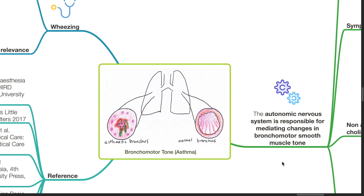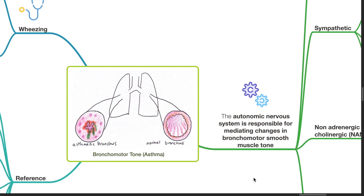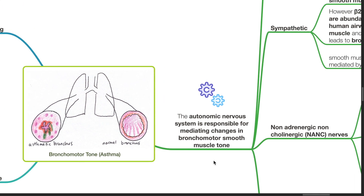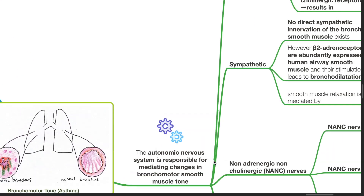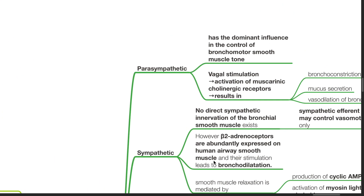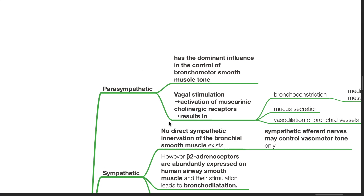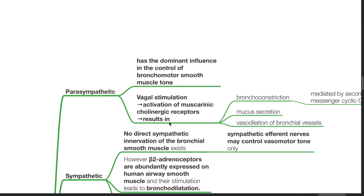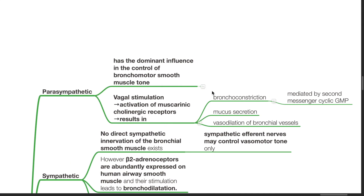Good evening, Dr. Phil here. Today we will be discussing broncomotor tone. The autonomic nervous system is responsible for mediating changes in broncomotor smooth muscle tone. The parasympathetic system has the dominant influence in the control of broncomotor smooth muscle tone.